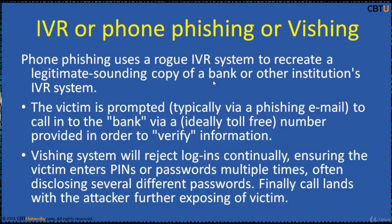Phone phishing uses a rogue interactive voice response system to create a legitimate-sounding copy of a bank or other institution's IVR system. The victim is prompted, typically via phishing email, to call into the bank via a toll-free number to verify information. The phishing system will continuously reset logins, ensuring the victim enters PINs and passwords multiple times, often disclosing several different passwords. Finally, the call lands with the attacker, further exposing the victim.